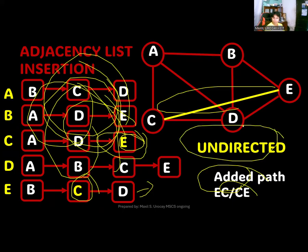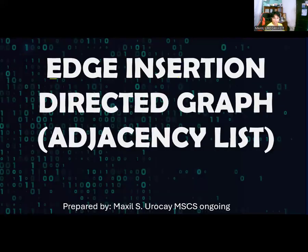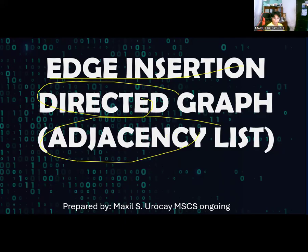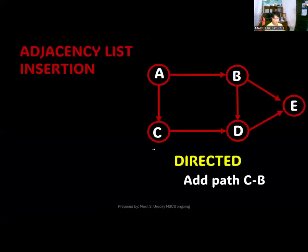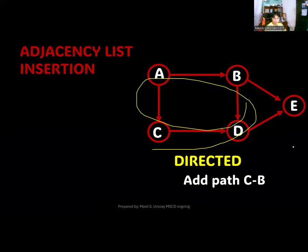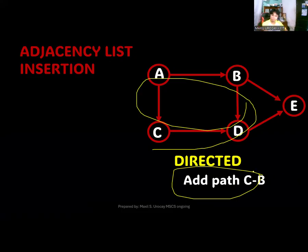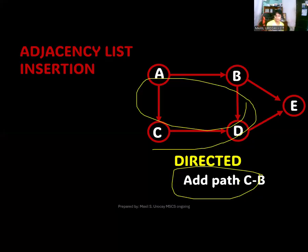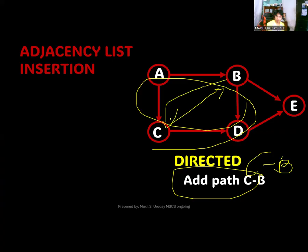Now that we are done with the undirected graph, we'll proceed with edge insertion for a directed graph. The same thing — we'll first get the adjacency list of this directed graph, following the same procedure from the previous video. Before you can add path from C to B: since this is a directed graph, C to B cannot be read as B to C — we decided to have C to B only. So C to B it is, and it will not be B to C. Be mindful of this since it produces a different result.